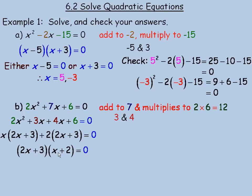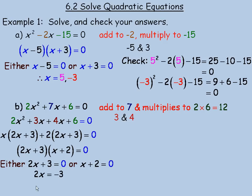Setting each factor equal to 0: for 2x plus 3 equals 0, we subtract 3 from both sides to get 2x equals negative 3, then divide by 2 to get x equals negative 3 halves. For x plus 2 equals 0, the solution is x equals negative 2, because negative 2 added to 2 gives 0.